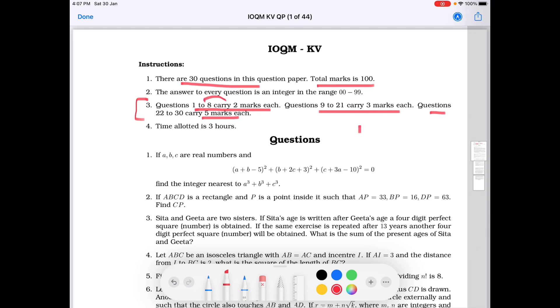So 1 to 8, 2 marks means 16, then 9 to 21, 3 marks, it means 13 questions into 3, so 39 marks. And 22 to 30 means 9 questions are of 5 marks, means 45. So 16 plus 39, 55, 55 plus 45, 100. So this is the marks distribution of these questions.